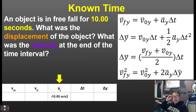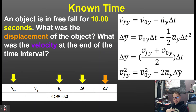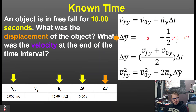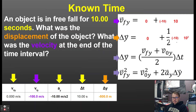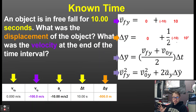For a known time problem: an object is in free fall for 10 seconds. What was the displacement? What was the velocity at the end of the time interval? The initial velocity is zero and the time interval is given. Using the equation without final velocity, plug everything in and get negative 500 meters. Then using the top equation, the final velocity is negative 100 meters per second.